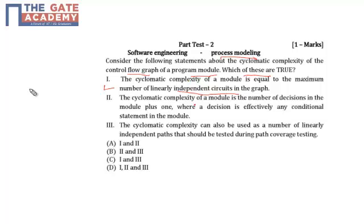Second option is cyclomatic complexity of a module is number of decisions in a module plus one, where decision is effectively any condition statement in a module. The third option is that cyclomatic complexity can also be used as a number of linearly independent paths that should be tested during path coverage testing.